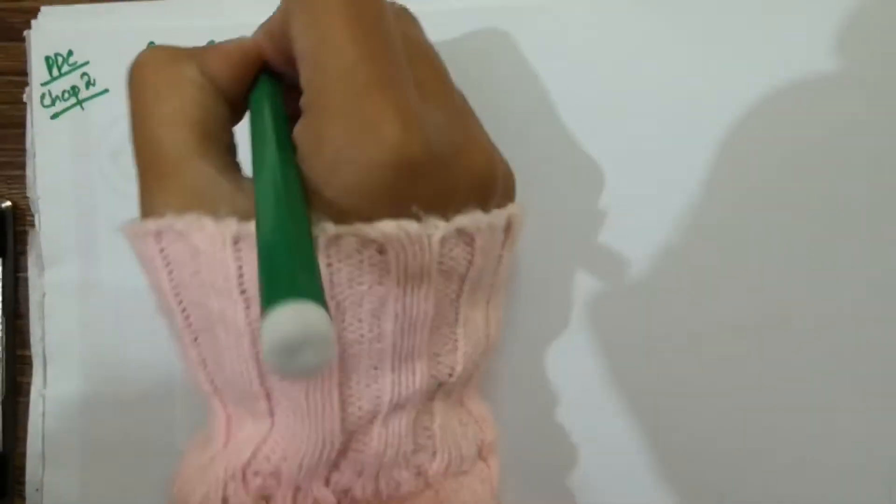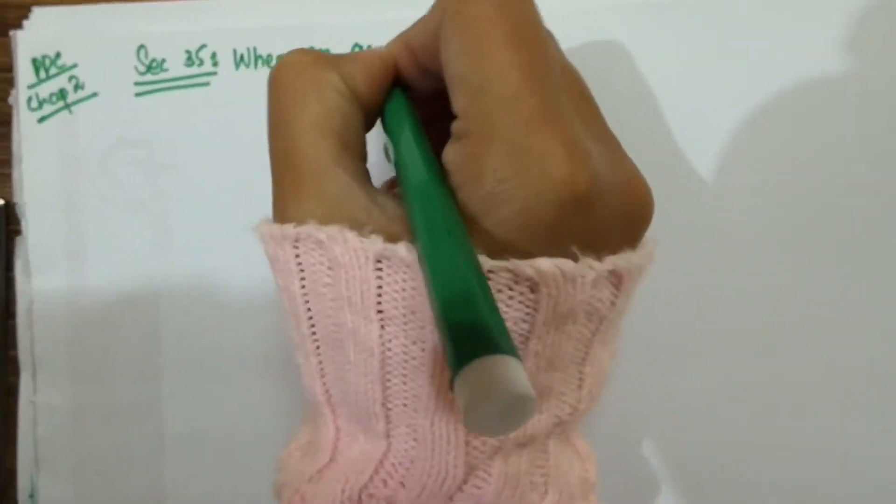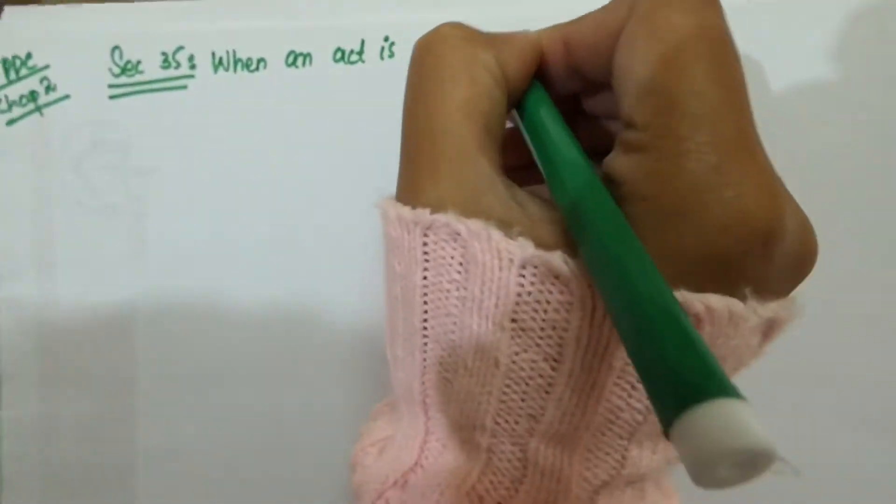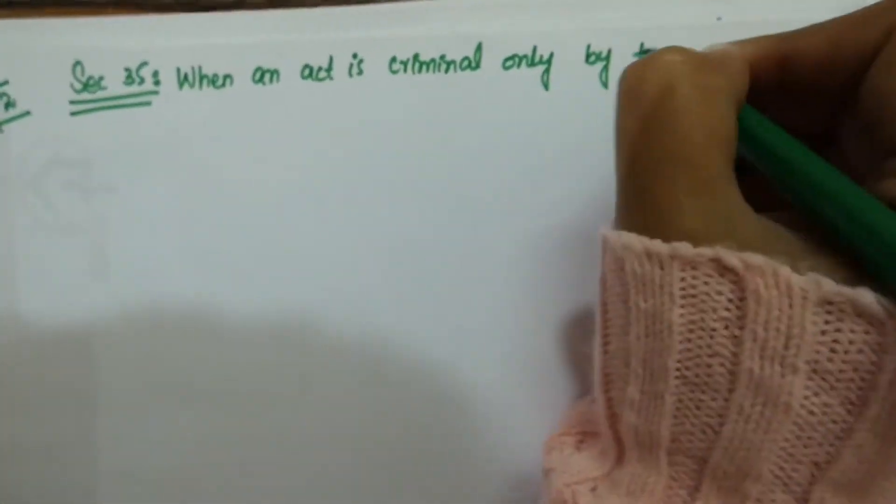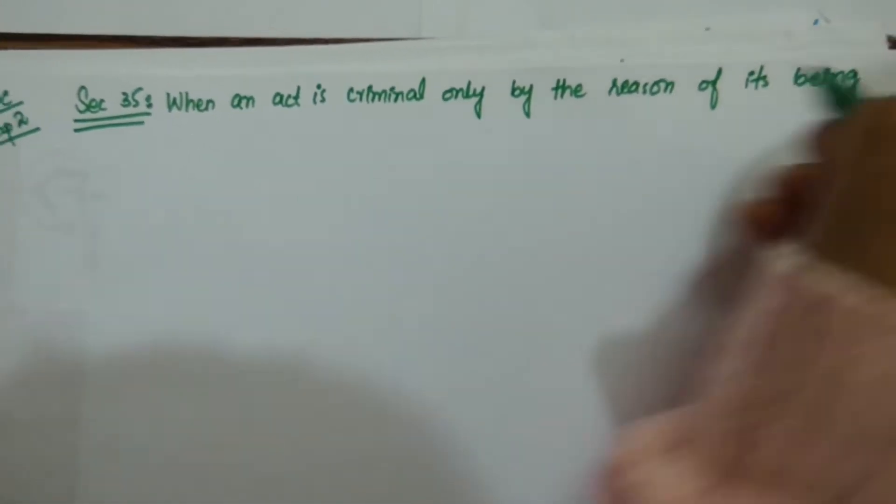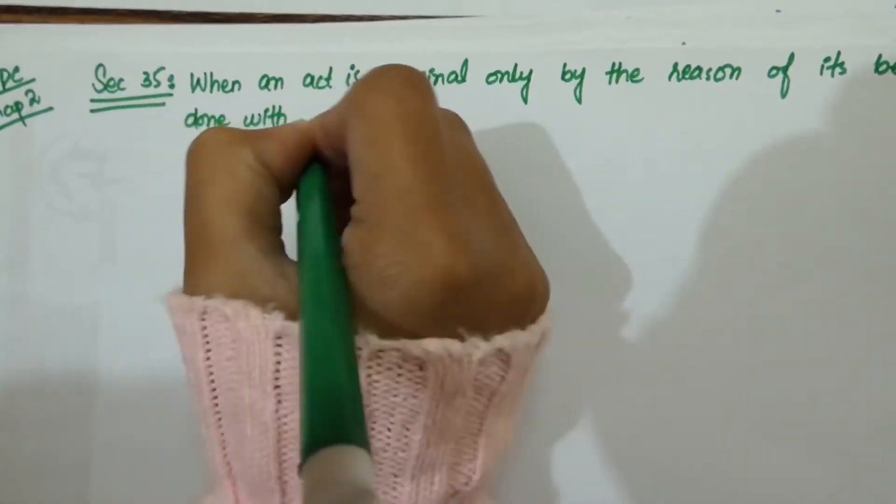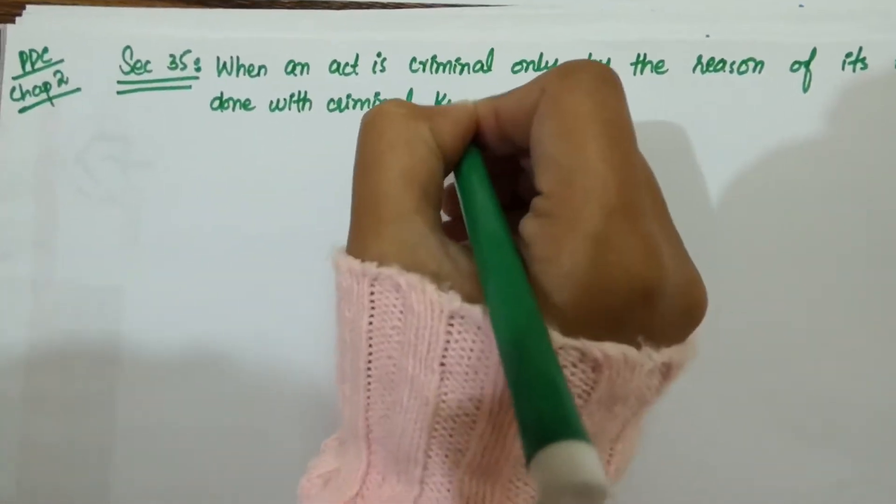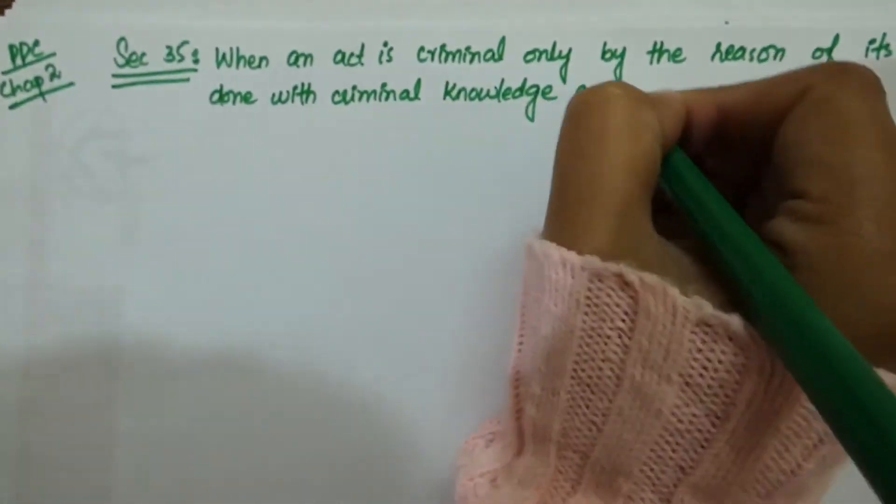Assalamualaikum friends and welcome to my channel Study Law with Pushra. Today we will study Section 35, Chapter 2 of PPC. Section 35 basically deals with vicarious liability. Section 35 says when an act is criminal only by the reason of its being done with criminal knowledge or intention.